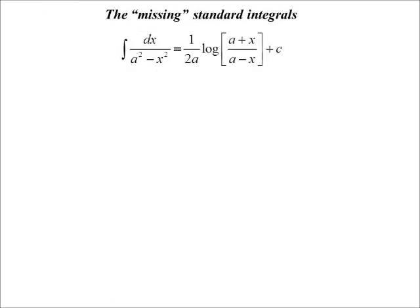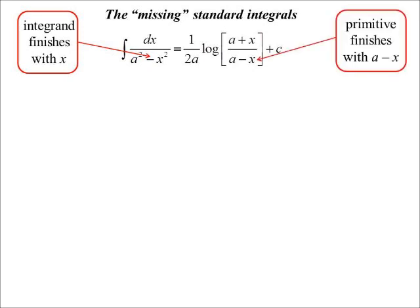All right, let's talk a bit more about those two missing standard integrals and how to memorise them. The easy way of memorising them, because they are very similar. So dx over the difference of two squares, a squared minus x squared. Now, basically, this is how my mind works. Sometimes it can be a frightening thing. Okay, if I look at it, the integrand, by the way, the integrand is what you integrate. That's called an integrand. The integrand finishes with the x. So the primitive, primitive function, when you integrate, you get primitive function. So the primitive finishes with a minus x.